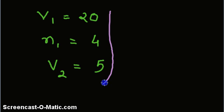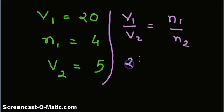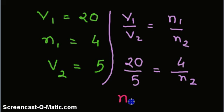V1 divided by V2 equals N1 divided by N2. We get 20 divided by 5 equals 4 divided by N2. As such, N2 is equal to 1 mole. Thank you.